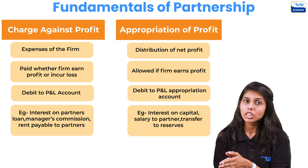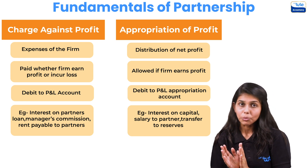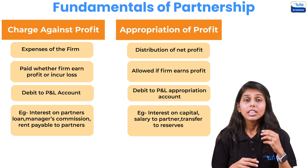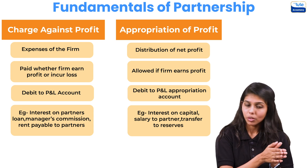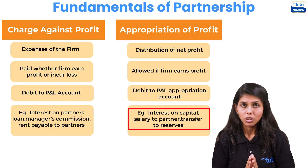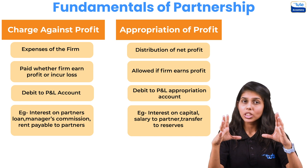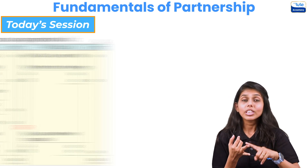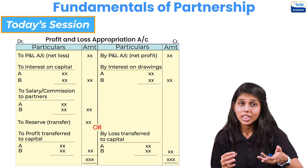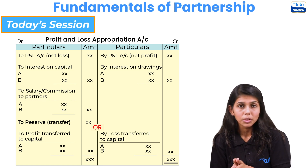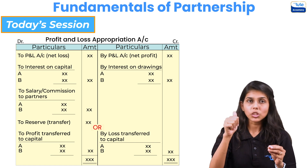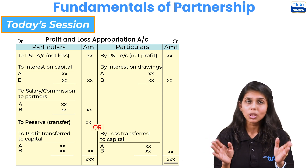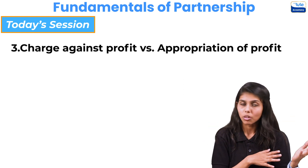Appropriation of profit means distribution of profit — done only if the firm has earned profits. If there are no profits, no appropriations are made. For example, interest on partner's capital is an appropriation of profit, done only if there are profits; but interest on partner's loan is a charge against profit, provided irrespective of profit or loss. Similarly, salary to a partner and transfer to reserves are appropriations, while office expenses and manager's commission are charges against profit.